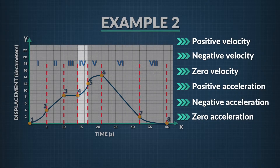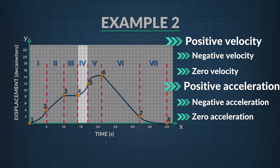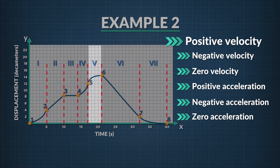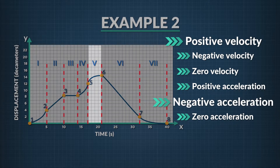In region 4, the slope is positive and increasing. That means both velocity and acceleration are positive — the go-cart is speeding up in the positive direction. In region 5, the slope is positive but decreasing, so velocity is positive but acceleration is negative. The go-cart is slowing down in the positive direction.